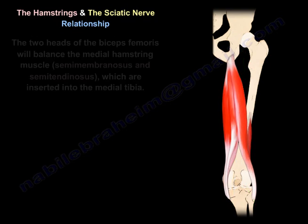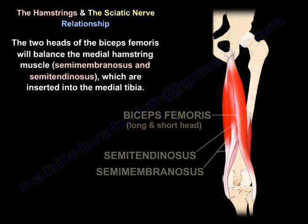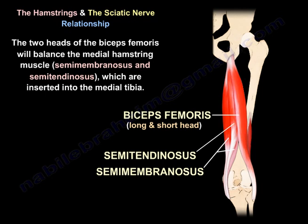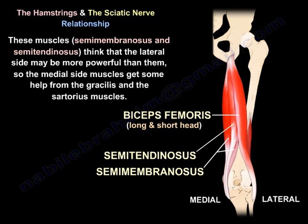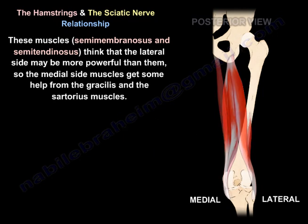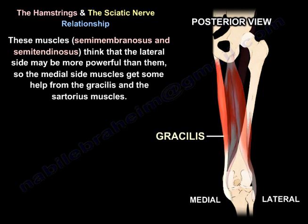The two heads of the biceps femoris balance the medial hamstrings — the semimembranosus and semitendinosus — which are inserted into the medial tibia and are also knee flexors. The medial side gets additional help from the gracilis and the sartorius muscles to balance against the lateral side.